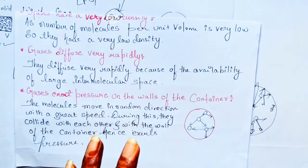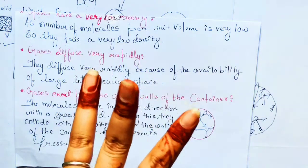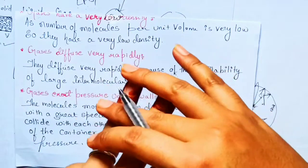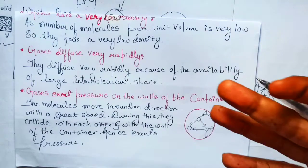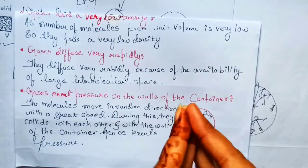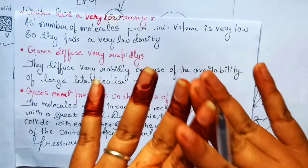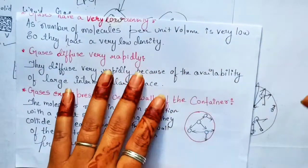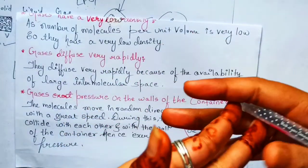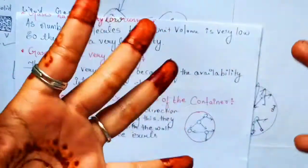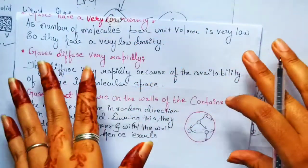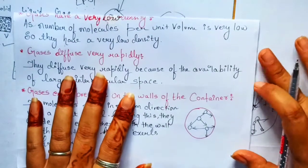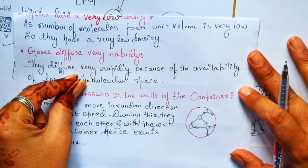So these were some of the key points about gases. Now we have completed solid, liquid, and gases — mainly the important properties. In the next class we will learn about the change of state of matter. If you have any doubts, do ask me in the comments section and I will solve all your doubts. If you haven't subscribed to my channel, please subscribe and hit the bell button.